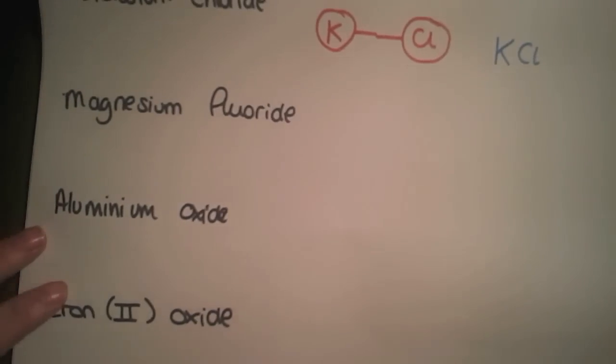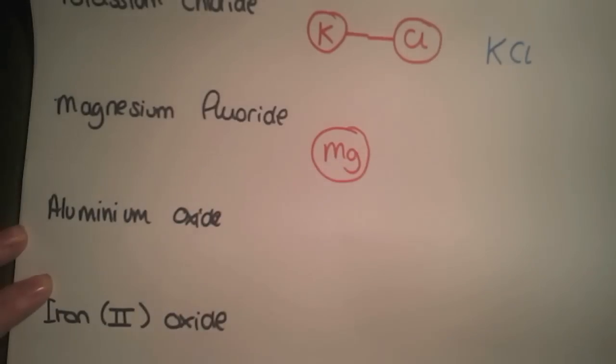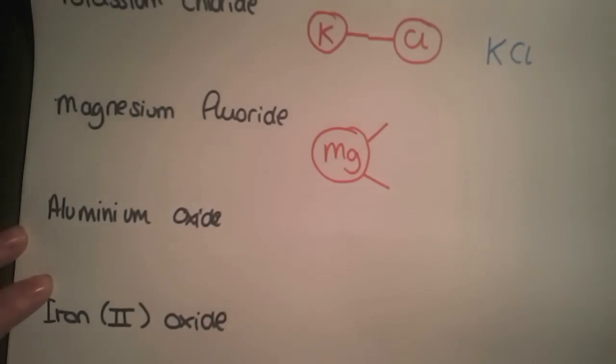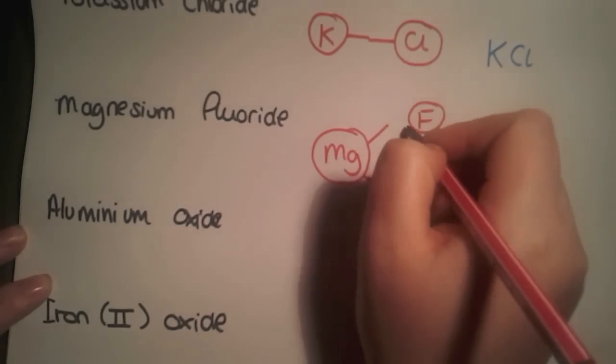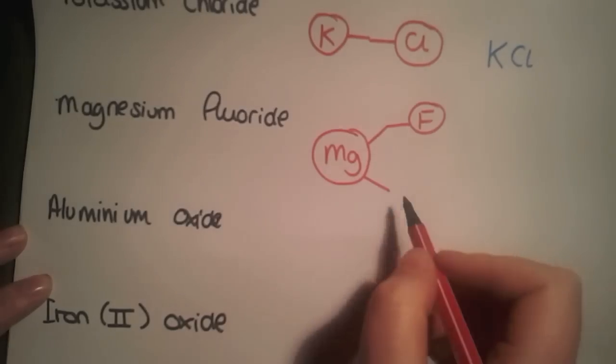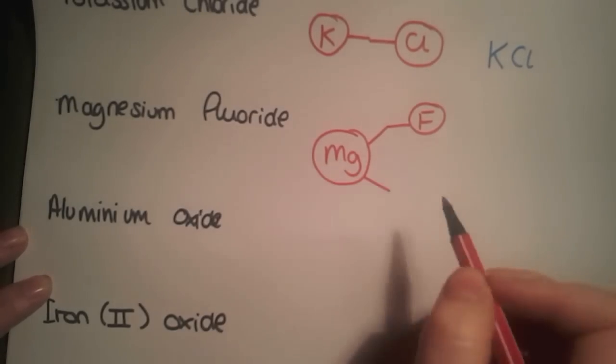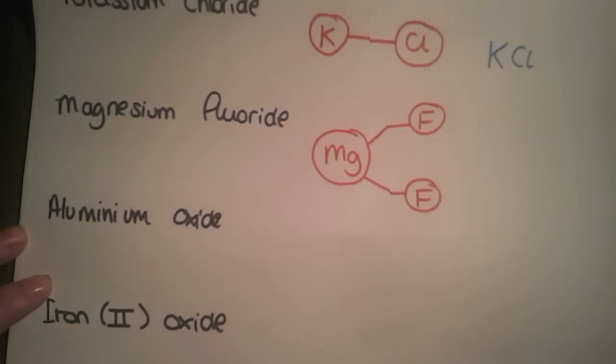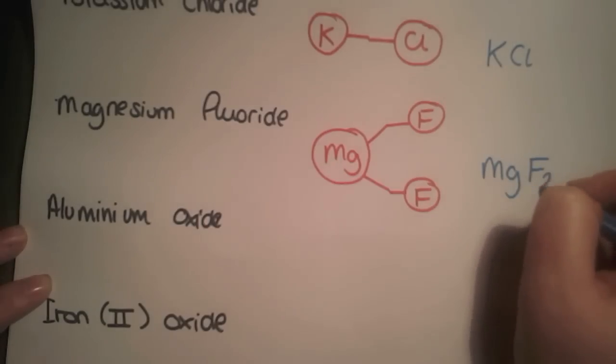We move on now to look at magnesium fluoride. Magnesium is in group two, it has two outer electrons to lose, so it has the ability to form two bonds. Fluorine is in group seven, it's the same column as chlorine, so reacting in a similar way to chlorine, can form one bond. Just like the first example, the only thing we can fill up the spare bond with is the opposite element in our compound, so we're going to put a second fluorine and count what we have. So we've got MgF2.